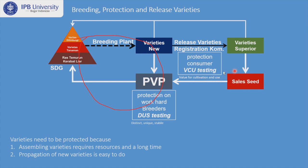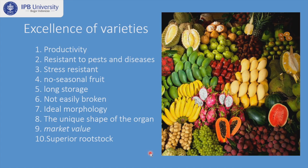The scheme is meant to protect the consumer, so they get the real variety they want to buy. The excellence of a variety can include productivity, resistance to pests and disease, stress resistance, non-seasonal production, long storage, not easily broken, ideal morphology with a unique shape, high market value, and even superior rootstock.